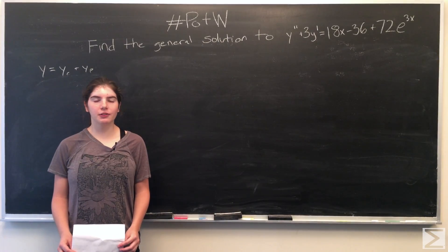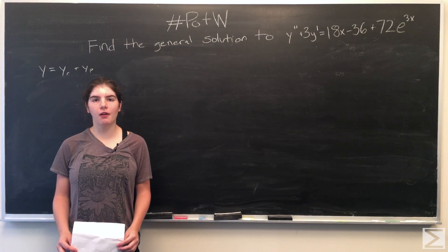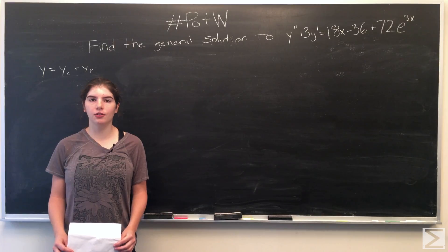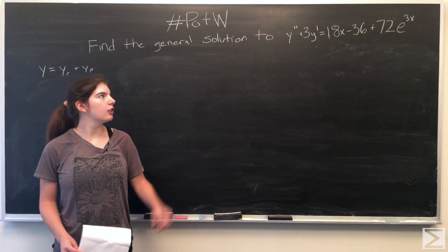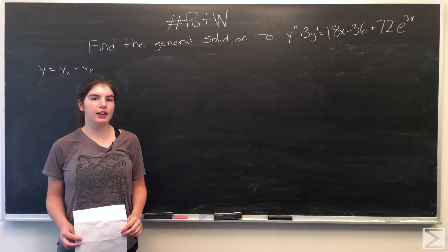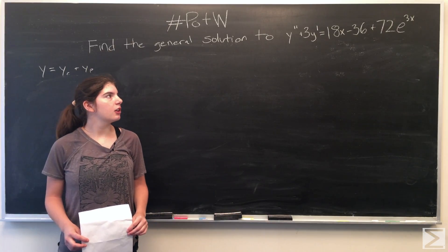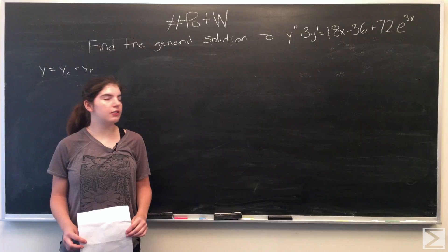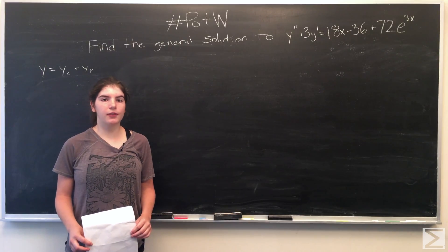Hi, welcome to the Center of Maths Problem of the Week. For this week's problem, we have a second-order non-homogeneous differential equation: y double prime plus 3y prime equals 18x minus 36 plus 72e to the 3x. And we want to find the general solution.